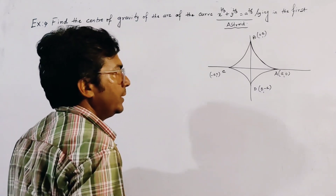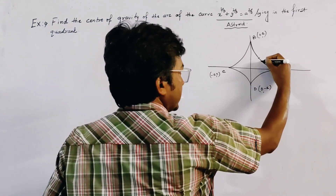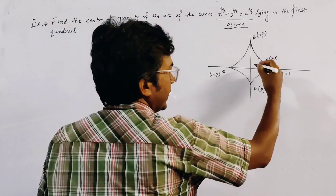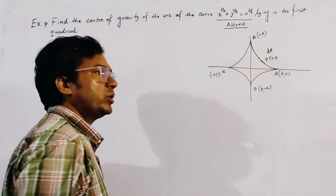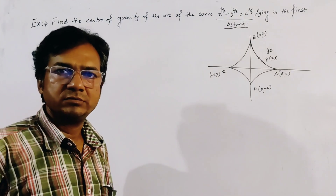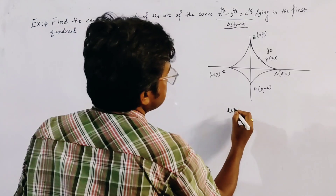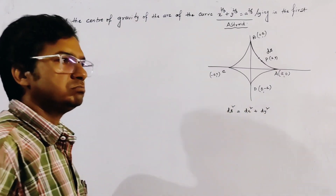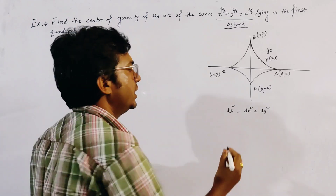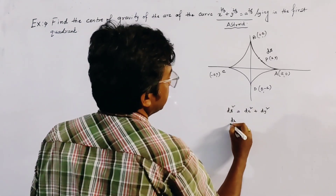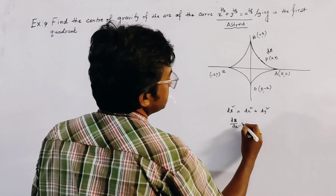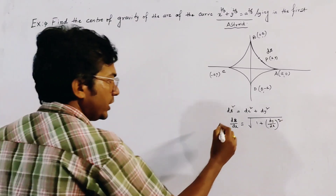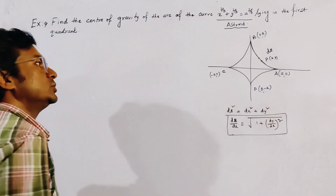We first consider an elementary arc. Let this be the elementary arc of the asteroid at point P with coordinates (x, y), and let the elementary arc be ds. Since this is an arc, it is ds. We know that ds² = dx² + dy². So ds = √(1 + (dy/dx)²) dx. We use this relation for solving this type of problem.